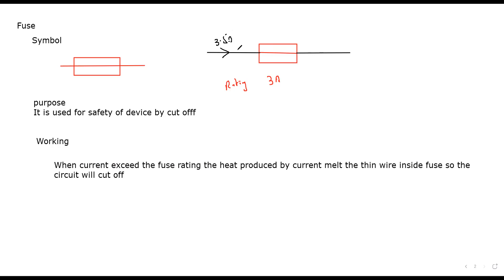If the current is 3.5 amperes — more than the fuse rating — it will produce enough heat to actually melt the wire. When the wire melts it will break, and when it breaks it blocks the current, not allowing it to flow in the rest of the circuit. That is how the fuse protects devices.